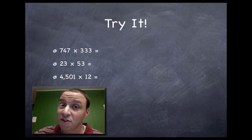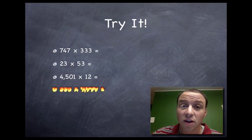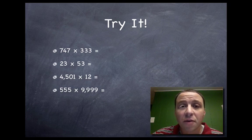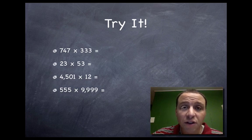The third problem, this one's a little hard, this is kind of a tough lattice to line up: 4,501 times 12. And then the last one, I think this one is also pretty challenging: 555 times 9,999. Solve these problems, check them with a calculator afterwards, show them to your teacher, show them to your mom, show them to your grandma, whoever it is who's helping you out with math. Show them that you know how to do this, and then maybe practice a few on your own. Hope this helped. Good luck.